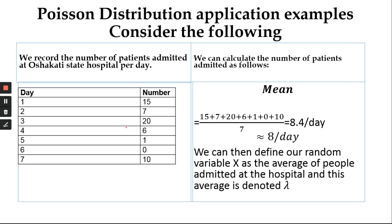Consider the following example: we record the number of patients admitted at a state hospital per day. Day 1 we get 15, Day 2 is 7, Day 3 is 20, Day 4 and so forth. We can get the average — the mean of these arrivals — by taking the total sum over the number of days in which observations were made. Observations were made over a 7-day period, giving us 8.4 per day on average.